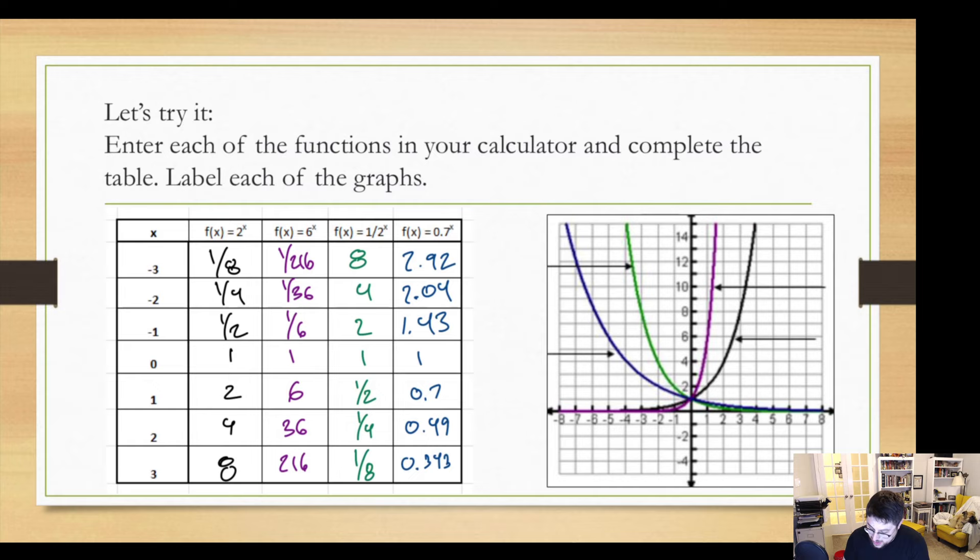And so this allows us to identify some things pretty quickly. First off, the graph that's in black is our 2 to the x graph. The graph that's in purple is our 6 to the x graph. The graph that's in green is our one half to the x power.